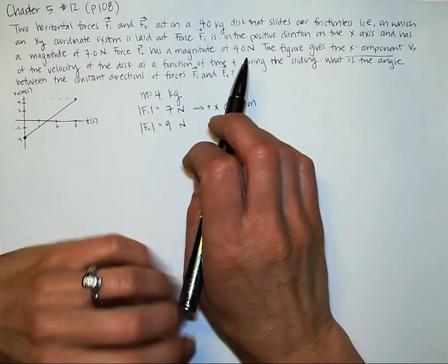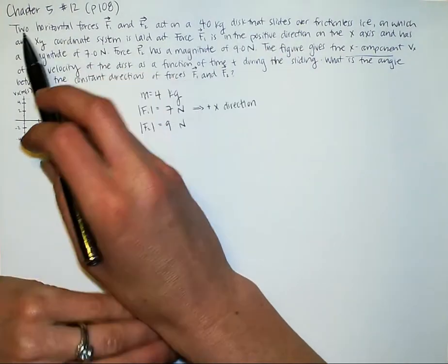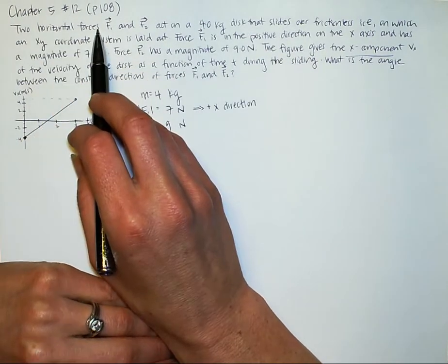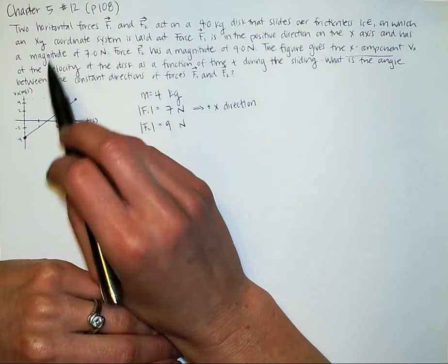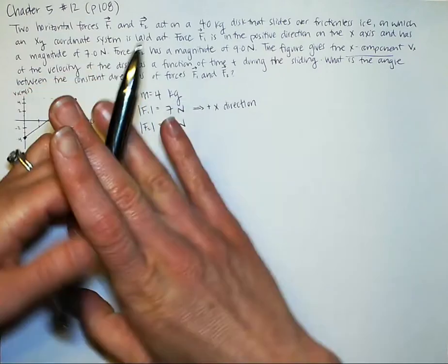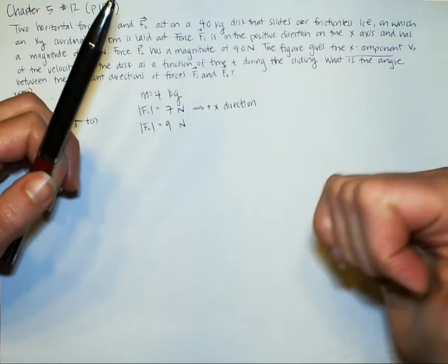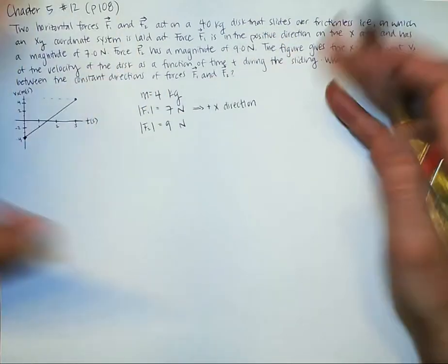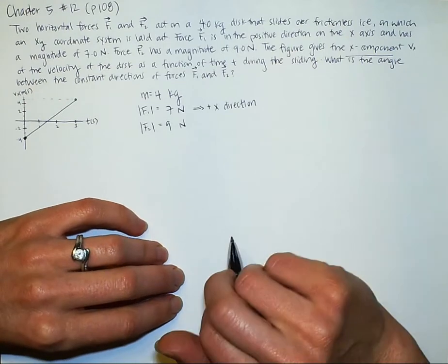First I want to address something that some people get confused about. It says two horizontal forces. Sometimes some students think that means they're automatically in the x direction. That's not what it means at all. It just means it's on a horizontal surface and so gravity is not affecting it. It's just like on a table, for example, with an xy coordinate system drawn on it.